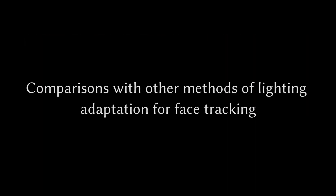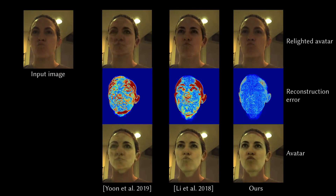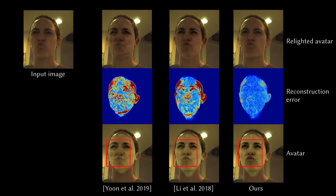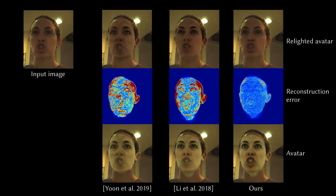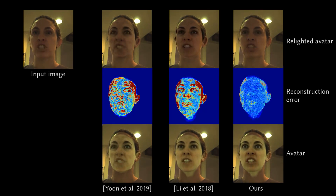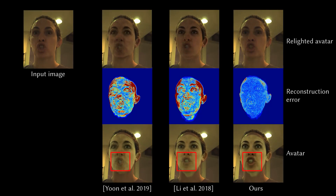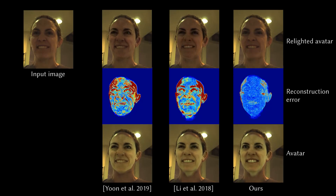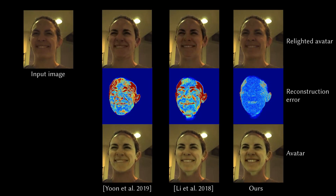We also compare with other methods of lighting adaptation for face tracking. Neither the 1x1 convolutional layer from Yun et al. nor spherical harmonics from Li et al. can describe complex illumination differences, resulting in blurred and inaccurate face details in the reconstructed avatar. Our lighting model can describe lighting well and give satisfying avatar results.